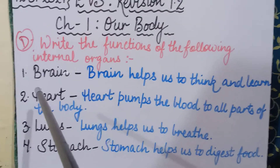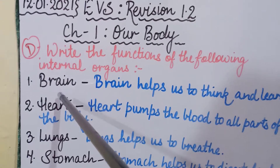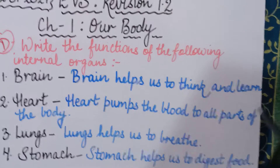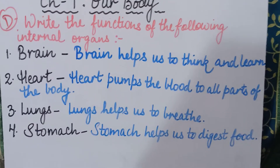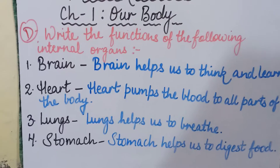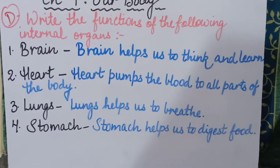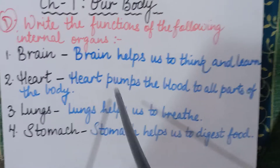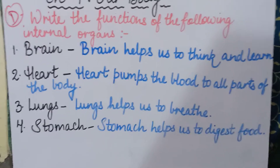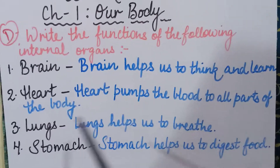The first internal organ is brain — B-R-A-I-N. The function of brain is to help us think and learn. The second internal organ is heart — H-E-A-R-T. Heart is the most important organ of our body because heart pumps blood to all parts of the body. So the function of heart is to pump blood to all parts of the body.